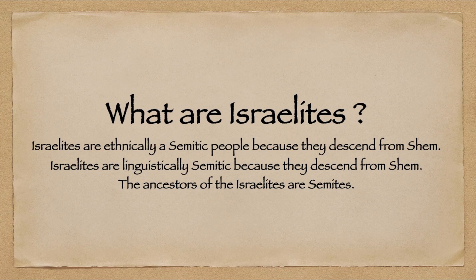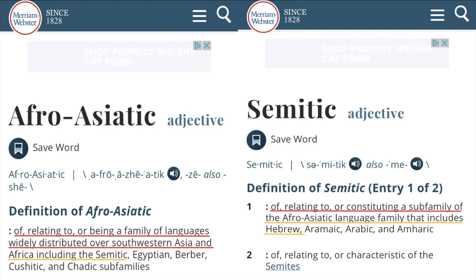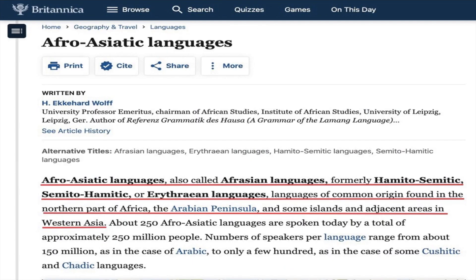The Israelites are ethnically a Semitic people because they descend from Shem. The Israelites are also linguistically Semitic because they descend from Shem. The ancestors of the Israelites are Semites. One important factor about the Semitic language is that it's part of the Afro-Asiatic language family. Afro-Asiatic includes the Semitic subfamily, which in turn includes languages such as Hebrew.